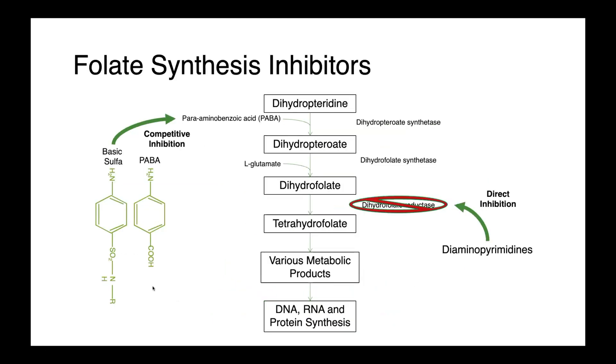Next, we have our folate synthesis inhibitors, our sulfa-type drugs, just like that first antimicrobial compound, Prontosil. Our sulfonamides work by competitively excluding PABA, para-aminobenzoic acid, from the folate synthesis pathway.